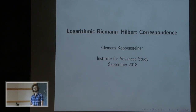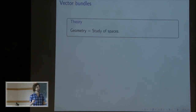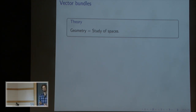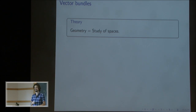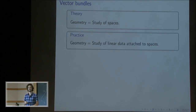If you ask some mathematician what is geometry, you'll probably see an answer like this: geometry is the study of spaces. But then if you actually go to read geometry papers, you'll see this is somewhat of a lie many times. We don't actually study spaces — usually we study something much easier. We study linear data attached to spaces, because spaces are just way too hard.